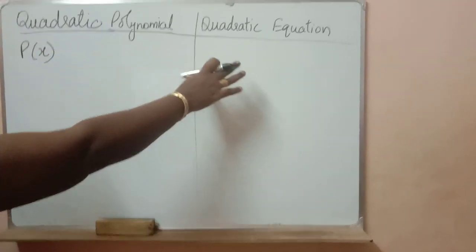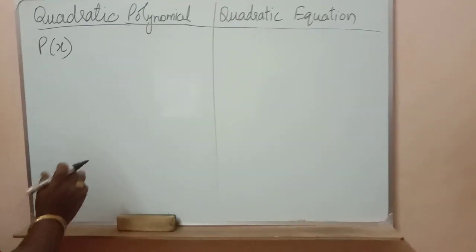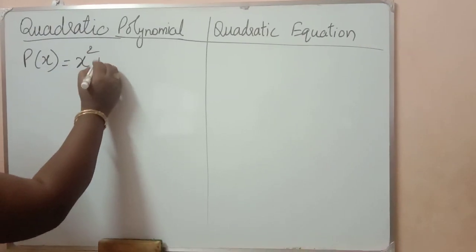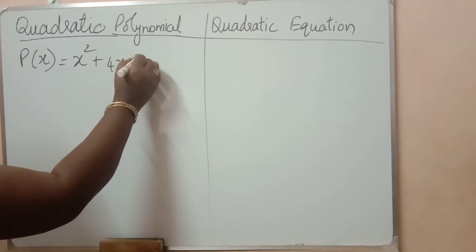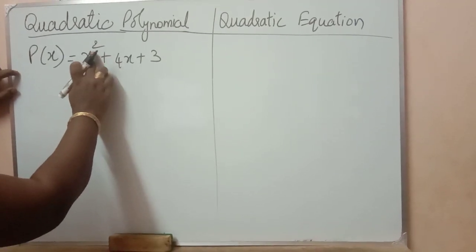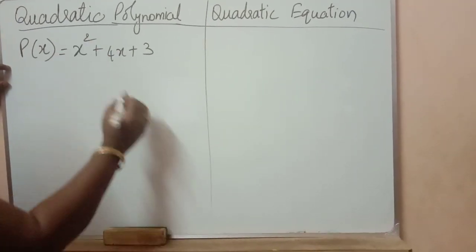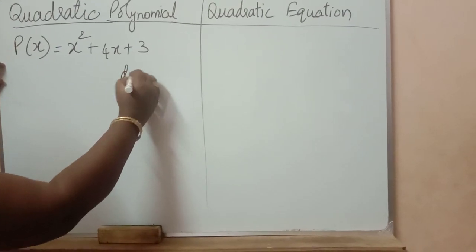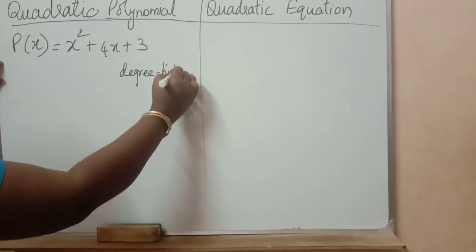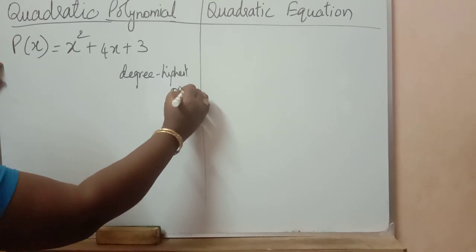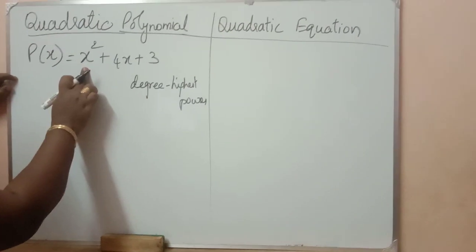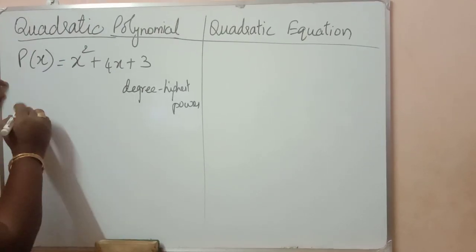Quadratic polynomial, quadratic equation — what is the difference between these two? For example, consider one polynomial: x squared plus 4x plus 3. This is a polynomial. Degree of the polynomial is 2. The highest power is called degree. So, degree of this polynomial is 2, and it is called a quadratic polynomial.